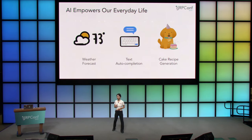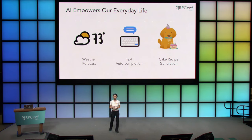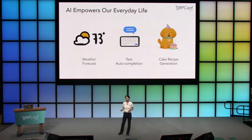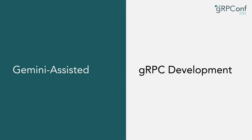Now let's switch gears and talk about how AI can assist gRPC development. How many of you have interacted with AI or used a large language model before? We have almost 80% of the room. AI is already touching every aspect of our lives — maybe you talked to your smart speaker for a weather forecast, replied to a text with auto-complete, or asked Gemini for a cake recipe. Today we're going to focus on one specific area where AI and LLMs are making a significant impact: the world of gRPC development.